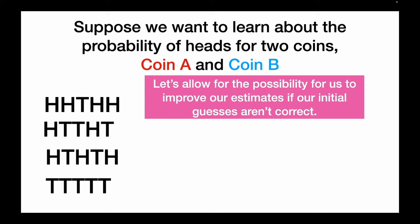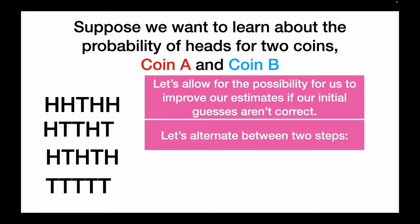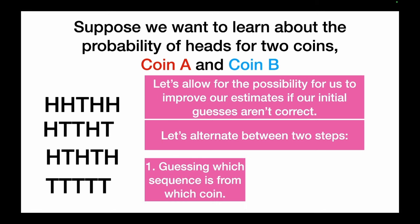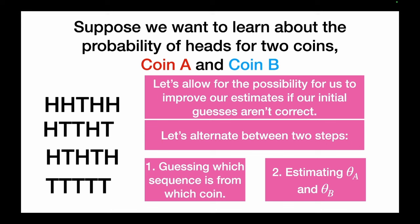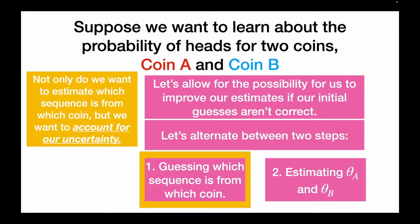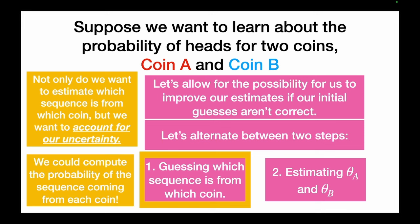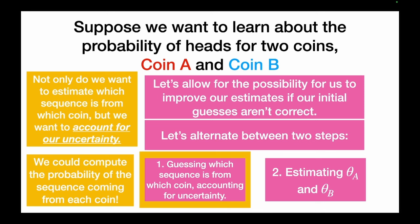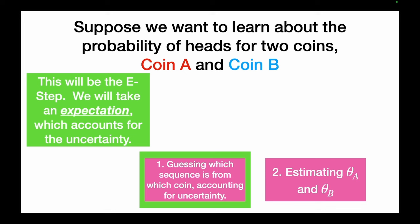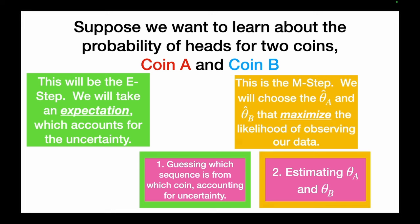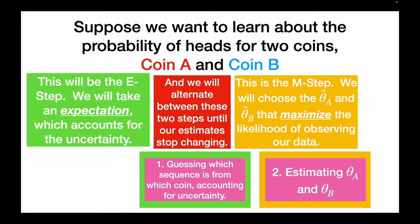Let's allow for the possibility to improve our estimates if our initial guesses aren't correct. We'll alternate between two steps: we're going to guess which sequence is from which coin, accounting for our uncertainty, and then estimate theta_A and theta_B. The E-step takes an expectation, which weights possibilities by their probability. The M-step estimates theta_A and theta_B by maximizing the likelihood. We repeat until our estimates stop changing.